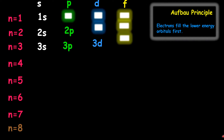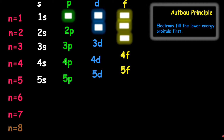Going to the fourth shell, there will be four subshells: 4S, 4P, 4D, and 4F. You can recognize the pattern so far. We will stop at the F subshells in this lesson, but in theory you can go beyond that. For the fifth shell, we'll have 5S, 5P, 5D, and 5F.